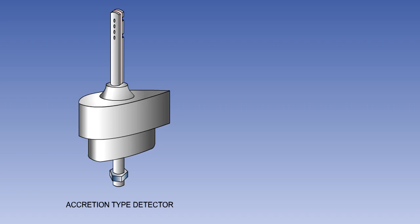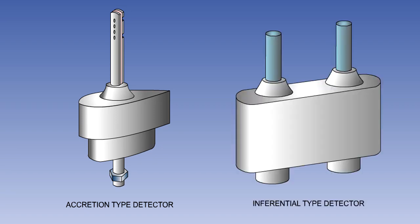Ice detection systems can be split into two groups. Those which sense a build-up of ice, known as accretion-type systems, and those which sense, by measuring temperature and humidity, when icing conditions are present. These are known as inferential-type systems.